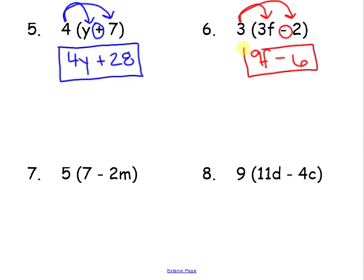Let's look at this. 5 times 7 is 35, bring down the operation which is subtraction, 5 times 2m. Well, we have 5 times 2 is 10, and then we have our m. We cannot go any further. We don't know what m is, so this right here is our final answer.